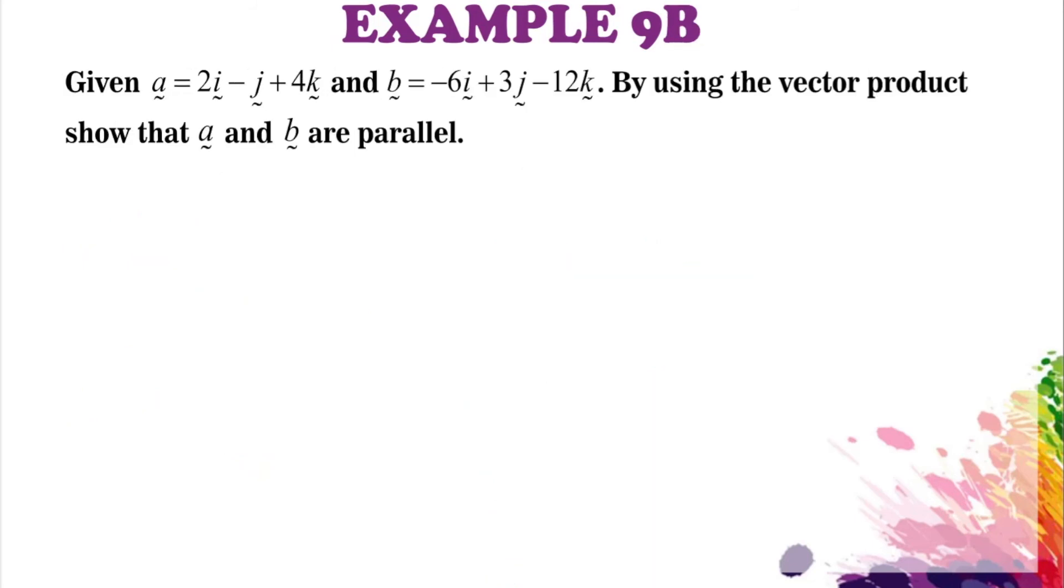Next example: given two vectors, by using the vector product show that A and B are parallel. So we know property number 8: A parallel to B means A cross B equals zero. So you have to find the vector product A and B.